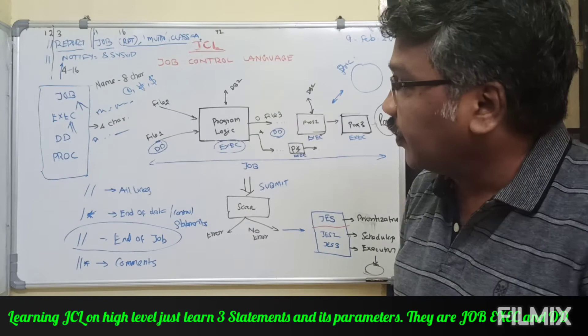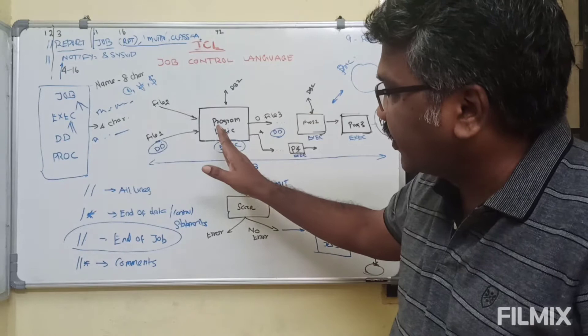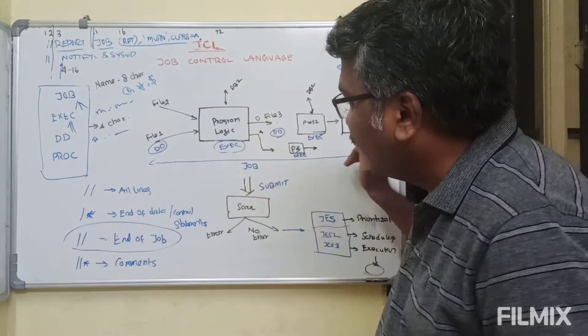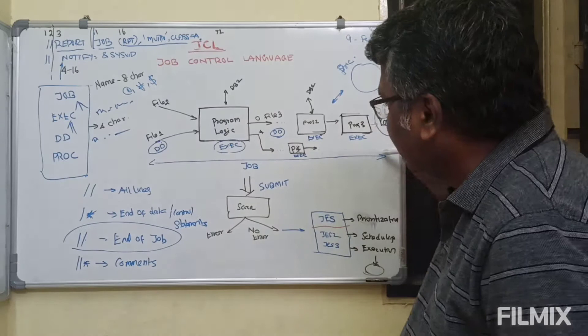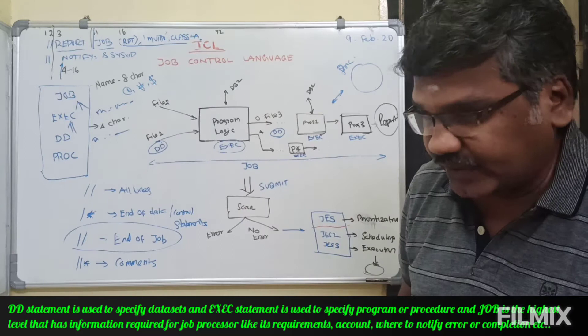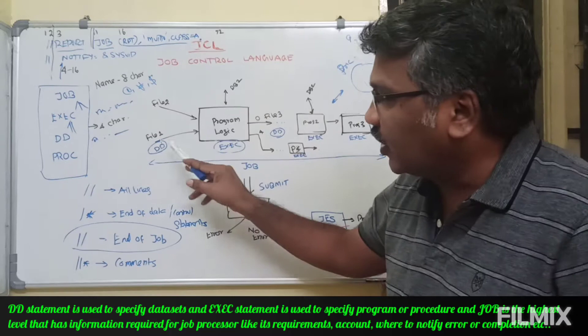Before seeing them in detail, I will talk about something about application development. Let's take a simple process: there is one extraction program, an update program, and a reporting program. These three programs together form a particular business process, and if there are n number of processes, they form basically one application. In this process, the whole process we call a job, every program we call an exec, and every program will have n number of inputs and outputs that we call DD.